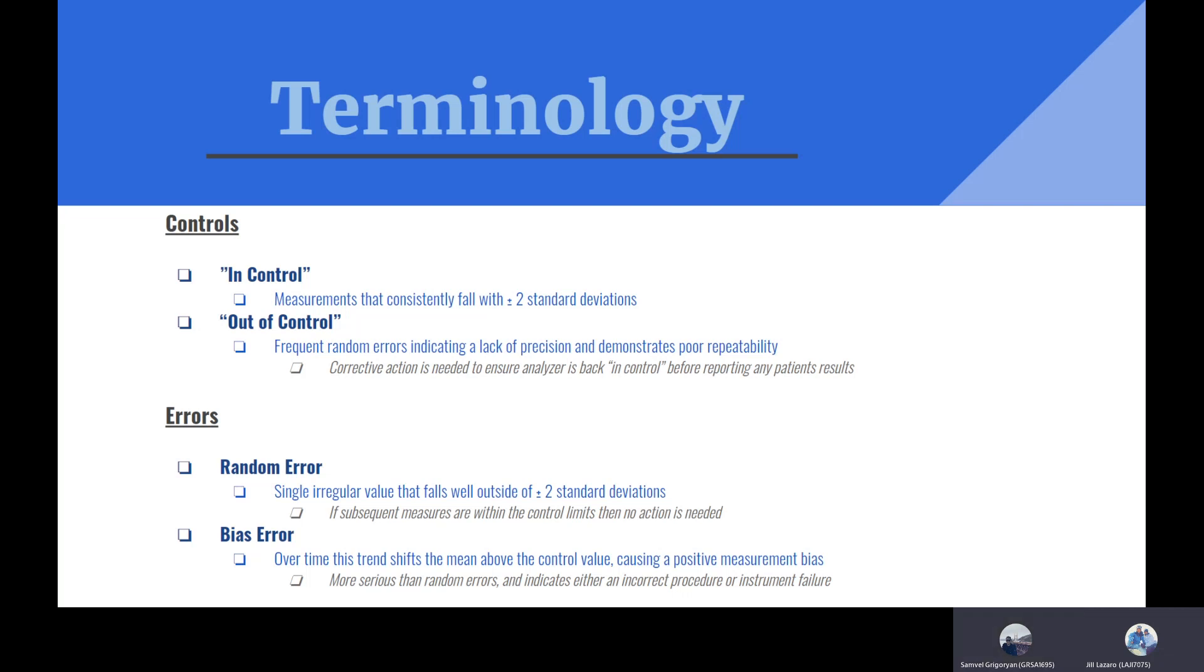We can have out of control, which is frequent random error that indicates a lack of precision and demonstrates poor repeatability. This is important because if we see an out of control state, we need to take corrective action to make sure that our analyzer is back in control. We're realigning it, making sure that it is where it's supposed to be.